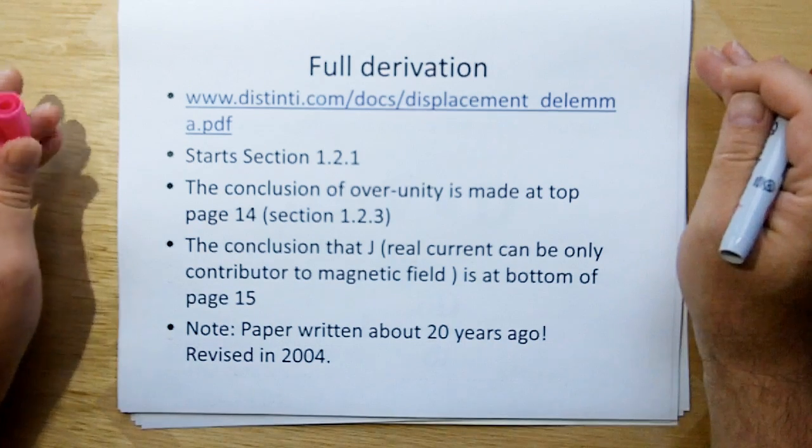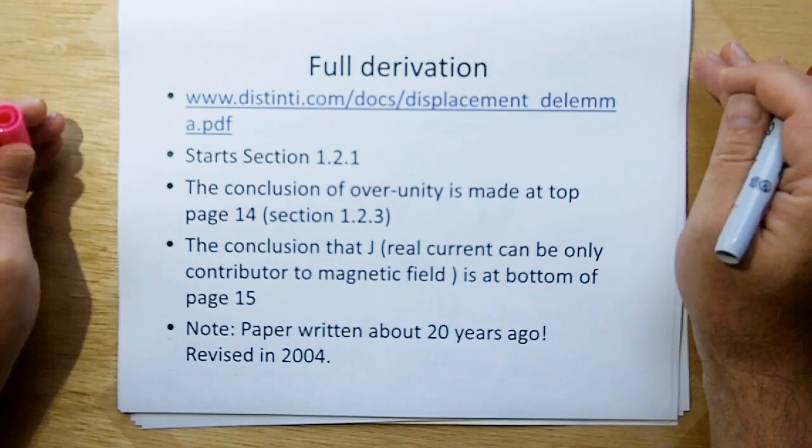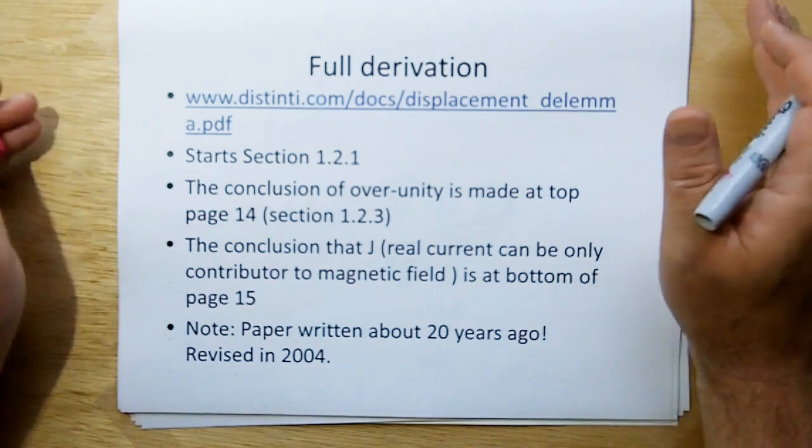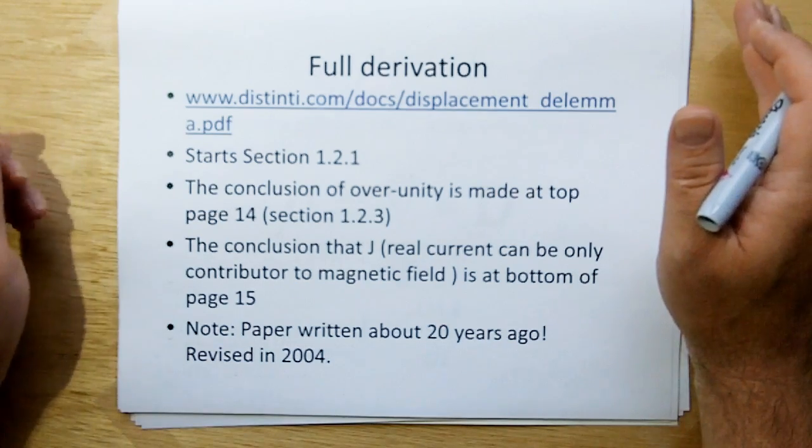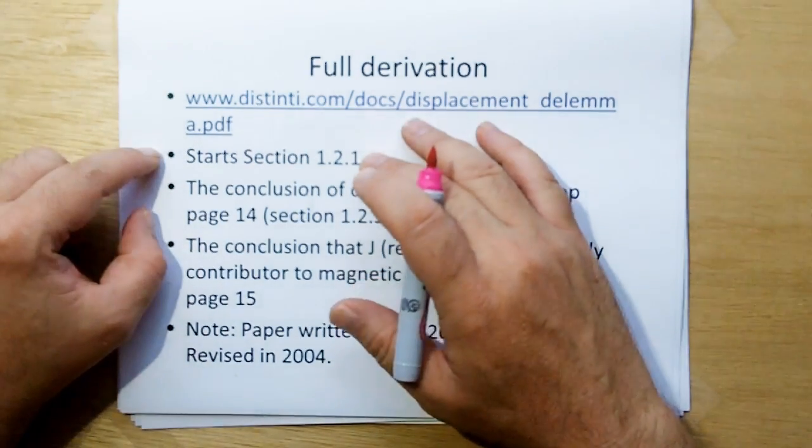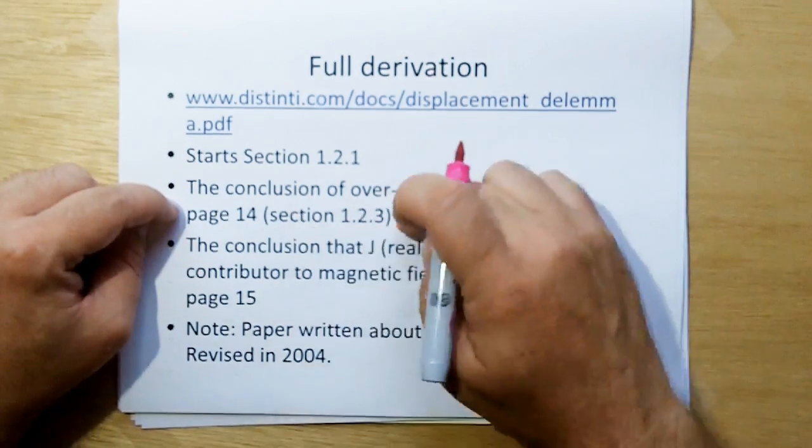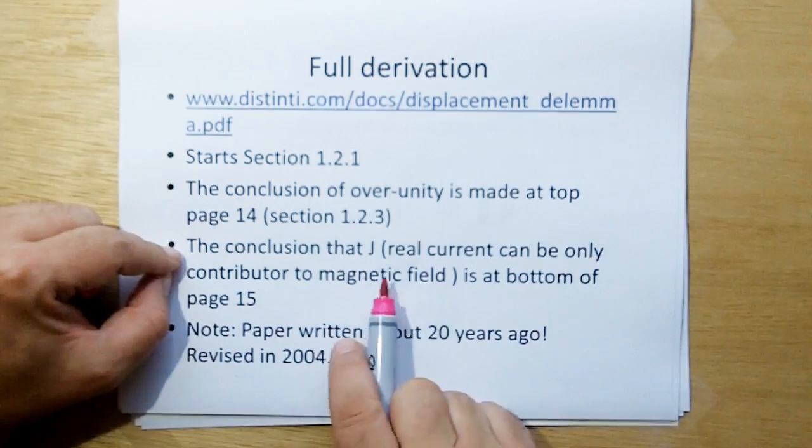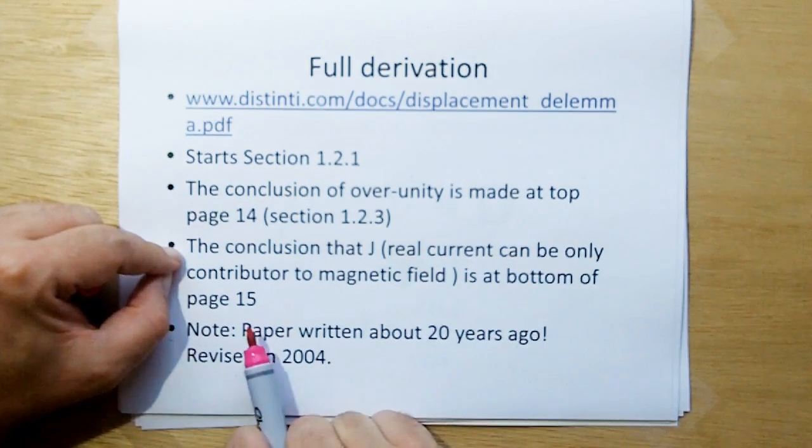The derivation is very long and elaborate. And I thought I was going to make a video to demonstrate the derivation, but it's so long and arduous, and I really want to go forward. I don't want to go backwards. The derivation in the document is fine. If you have the desire to go through it, it starts on section 1.2.1. The conclusion for the overunity is made at the top of page 14, which is section 1.2.3. And the conclusion that the real current is the only contributor of the magnetic field is at the bottom of page 15.